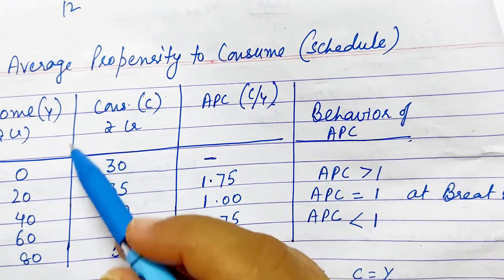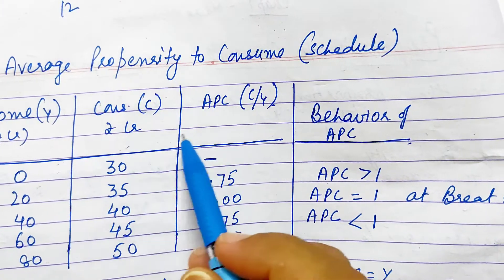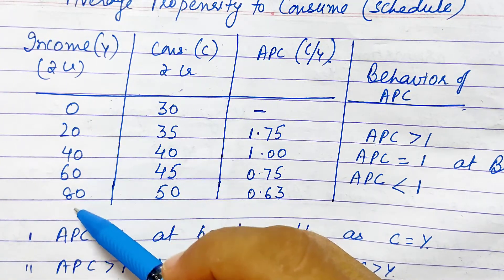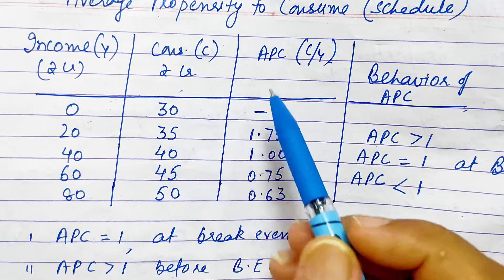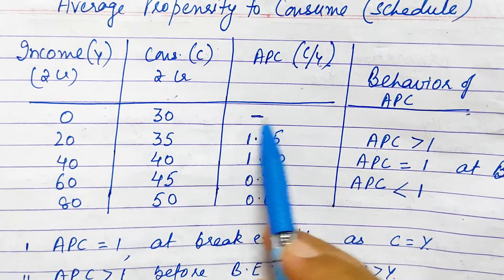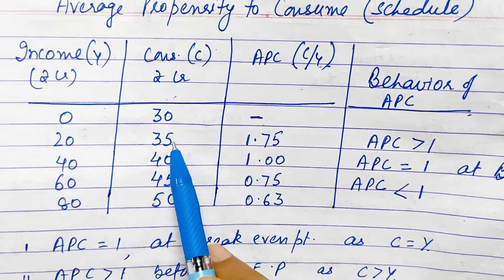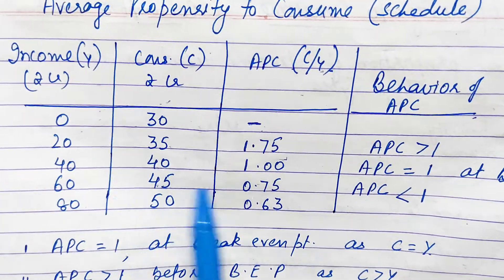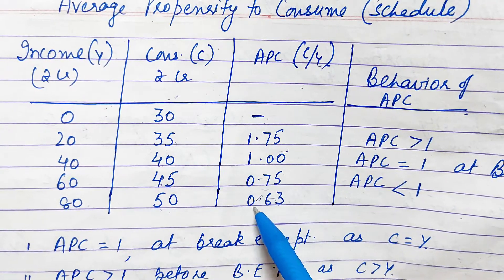With the help of a schedule, we need the level of income to relate C and Y and calculate APC. The levels of income are 0, 20, 40, 60, 80 crore, and their corresponding consumption expenditure values are given. APC is calculated as C upon Y. At zero level of income, APC is not to be calculated — write it blank. Then 35 upon 20 = 1.75, 40 upon 40 = 1, 45 upon 60, and 50 upon 80 — these are the figures calculated.